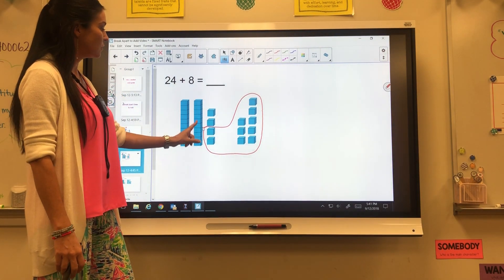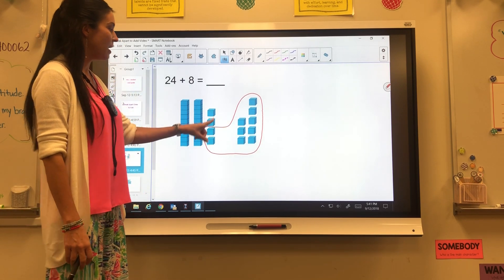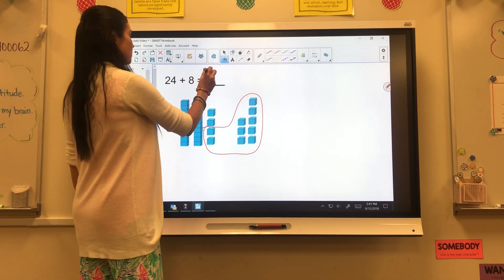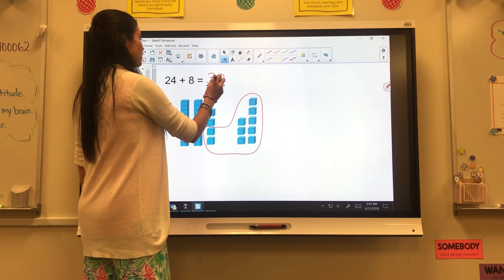Whatever way you can circle them to know that that is now a 10. So I'm going to count again, 10, 20. This is going to be 30, and I have two left. So my answer is 32.